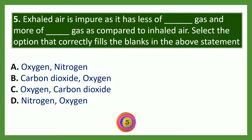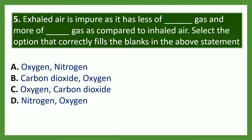Exhaled air is impure as it has less of dash gas and more of dash gas as compared to inhaled air. Select the option that correctly fills the blanks. The answer is option C — exhaled air is impure as it has less of oxygen and more of carbon dioxide.